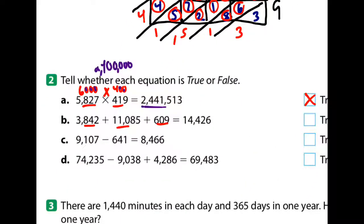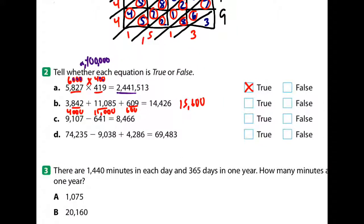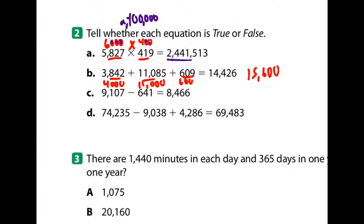Next, let me do a little estimating. That's about four thousand plus eleven thousand plus six hundred — which gets me fifteen thousand six hundred. That's not really close to fourteen thousand four hundred twenty-six, so I'm going with false.